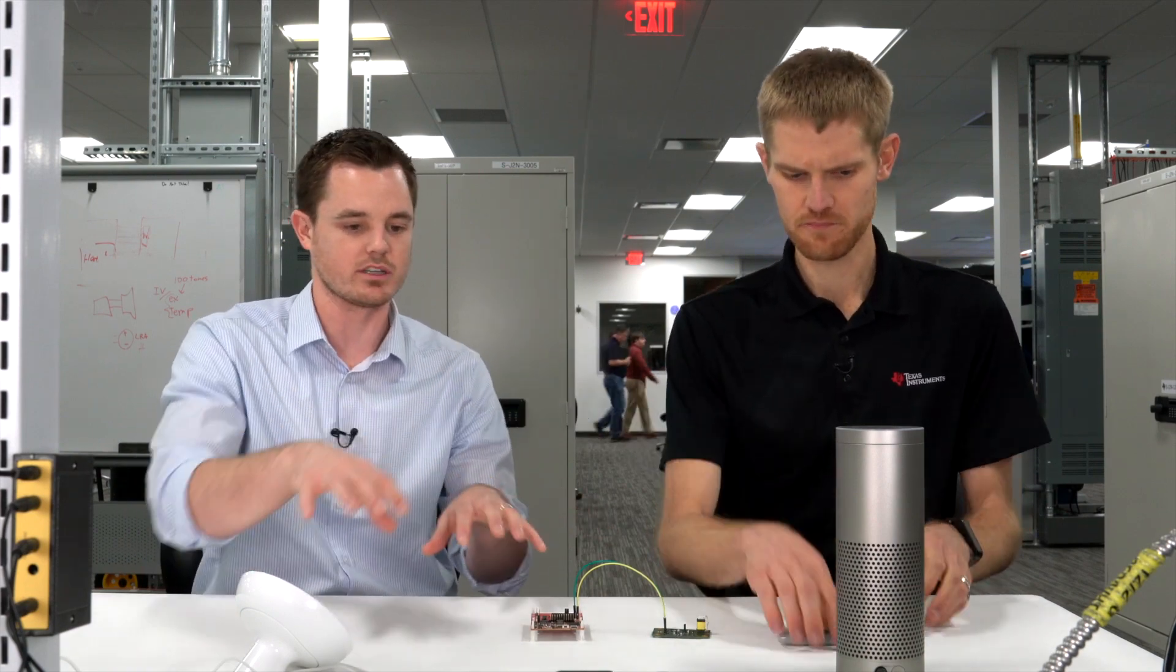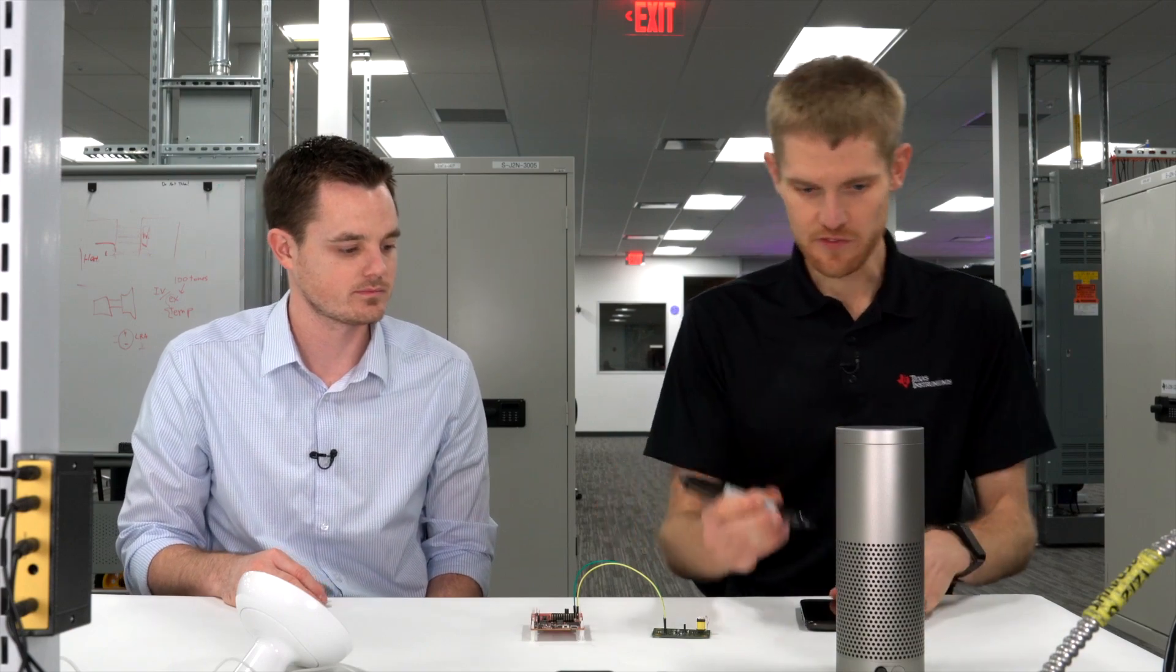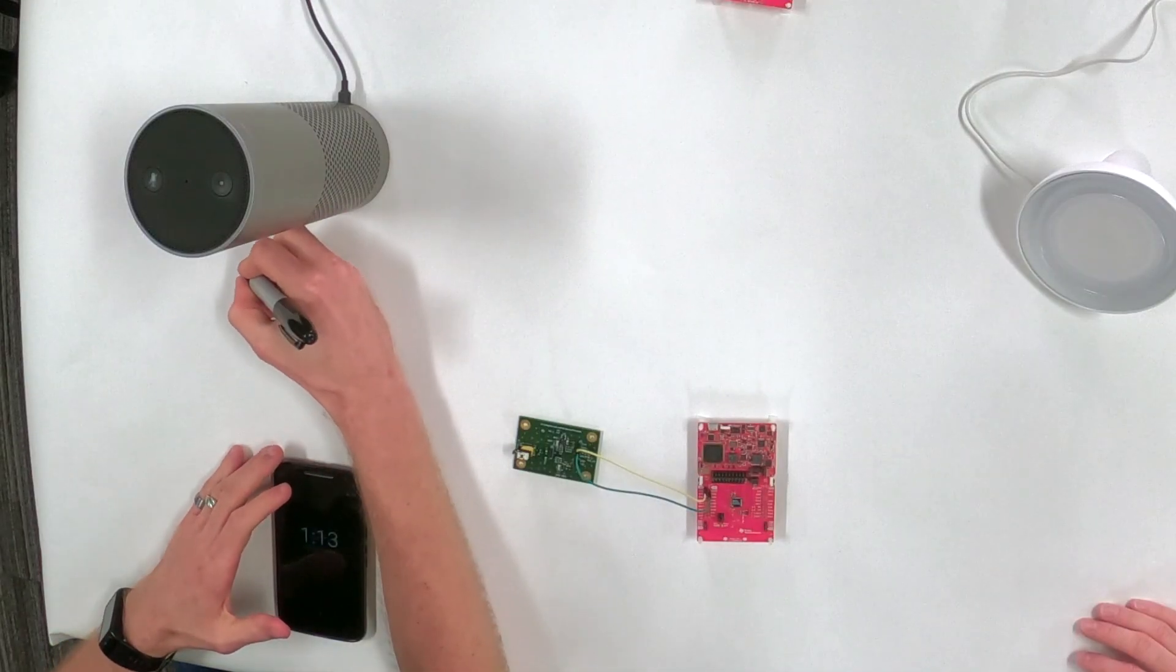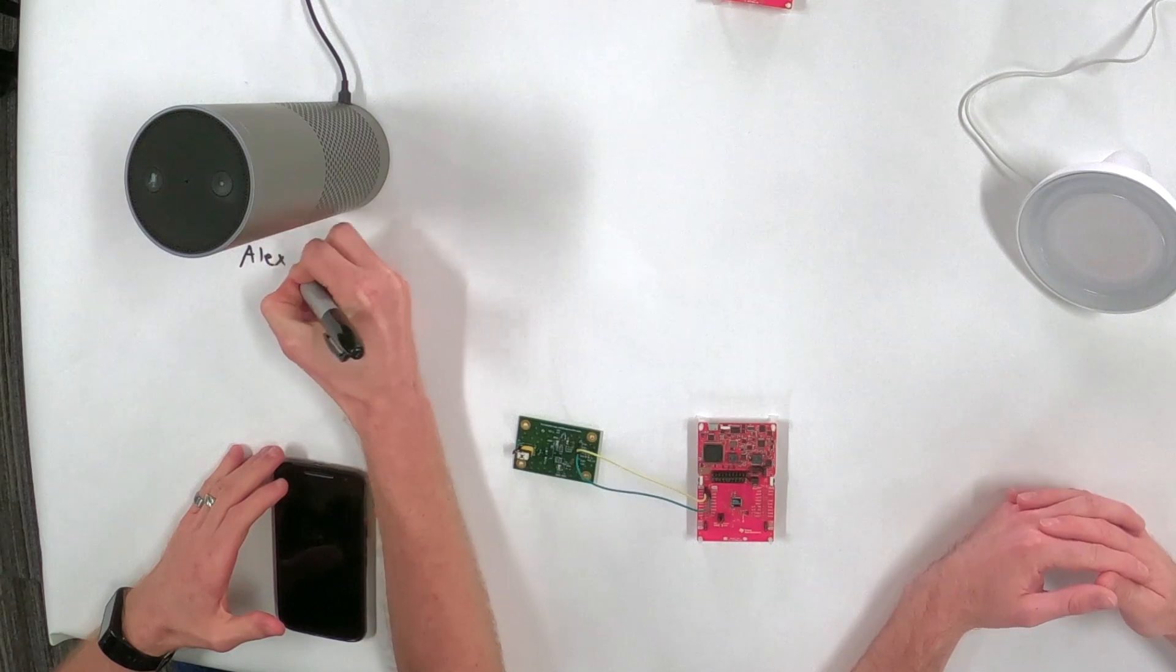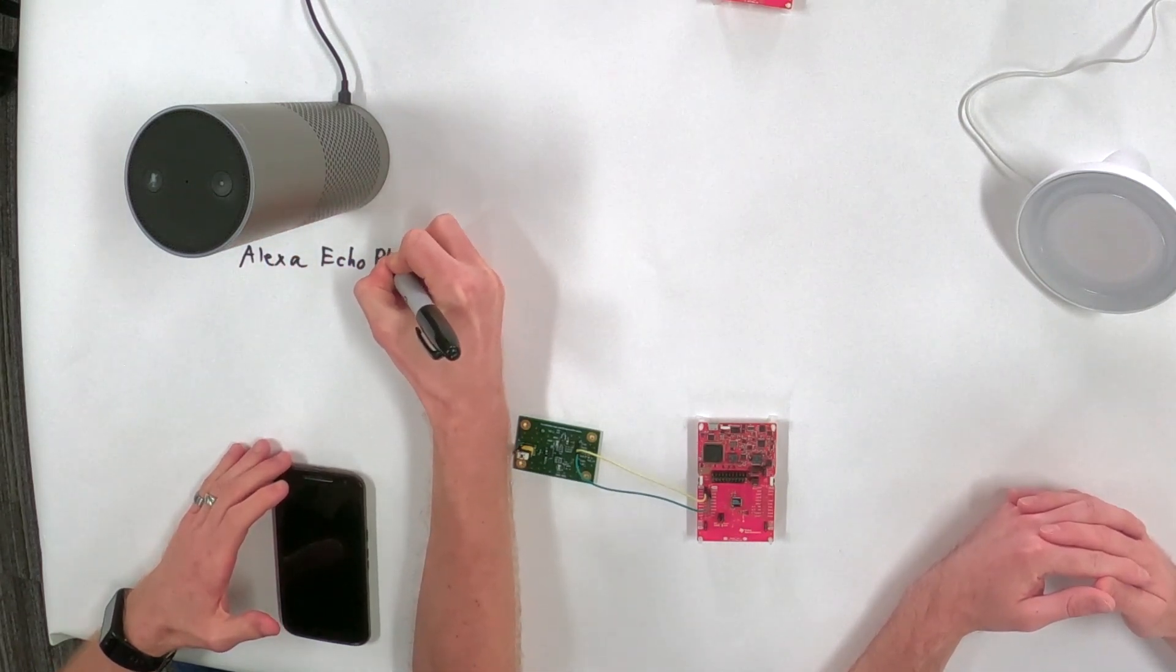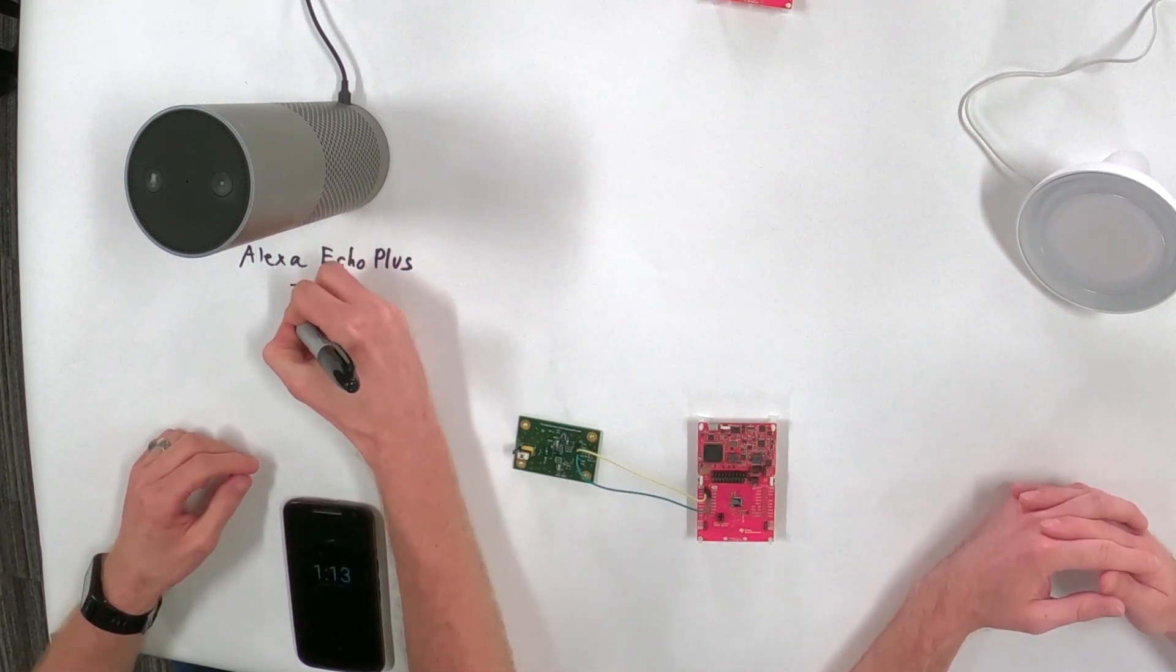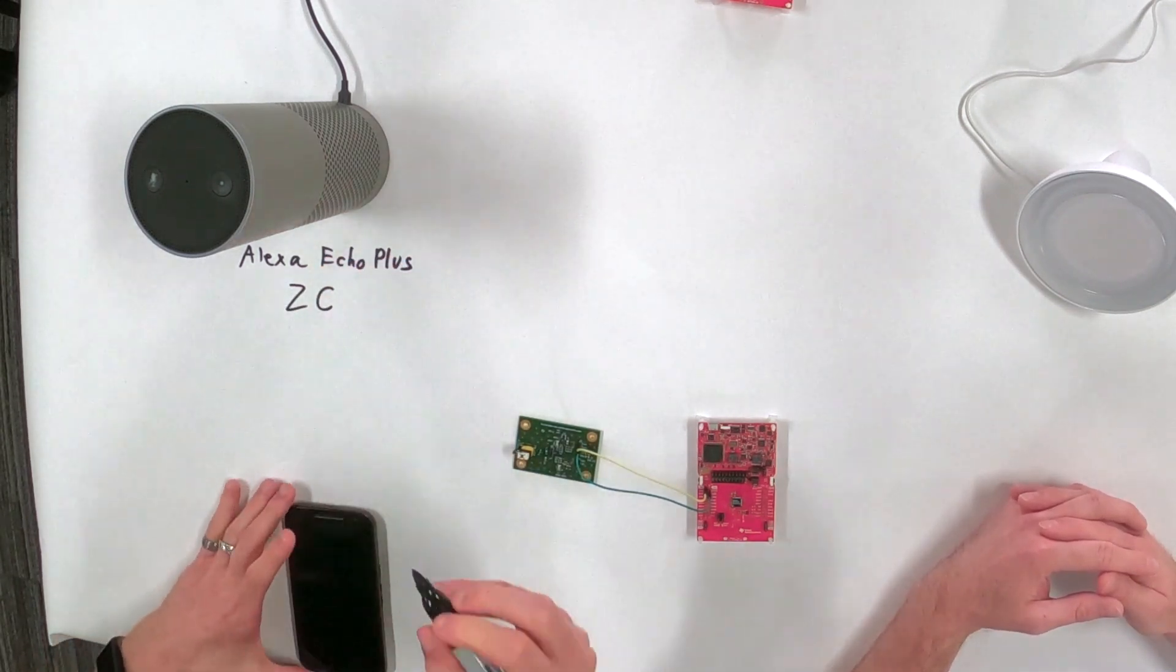Awesome. Well, yeah, let's get into it. Can you draw me a little diagram, show me what exactly we're looking at here? Oh, yeah, I'd love to. So basically to the left here, we have an Amazon Alexa Echo Plus.